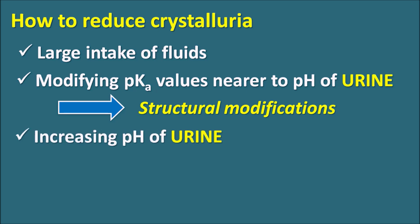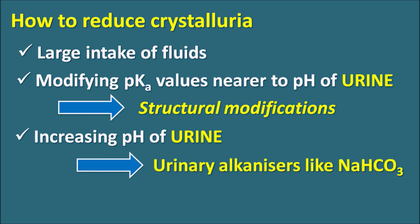The third approach is increasing urinary pH. If crystals are already found in the urine, urinary alkalizers such as sodium bicarbonate can be used to increase urine pH, dissolving the crystals. Note that the second approach (decreasing pKa) and the third approach (increasing urinary pH) are essentially opposite strategies, but both can prevent crystalluria.